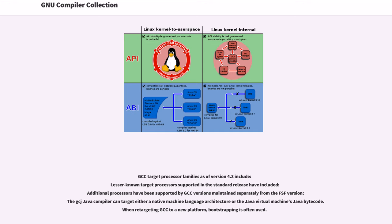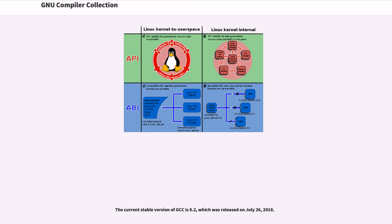The GCC target processor families as of version 4.3 include a wide range of processors. The GCJ Java compiler can target either a native machine language architecture or the Java virtual machine's Java bytecode. When retargeting GCC to a new platform, bootstrapping is often used. The current stable version of GCC is 8.2, which was released on July 26, 2018. As of version 4.8, GCC is implemented in C++.